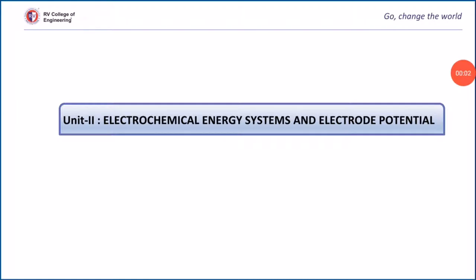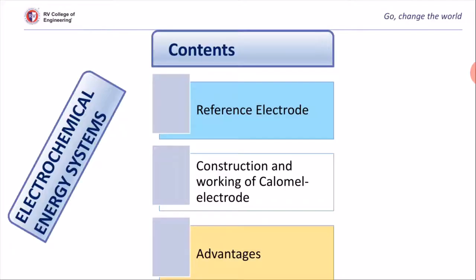Welcome back to engineering chemistry class. Today we will continue our discussion in unit 2: electrochemical energy systems and electrode potential. In today's class I am going to cover different types of electrodes, reference electrodes, construction and working of calomel electrode, advantages of calomel electrode over other electrodes, and measurement of single electrode potential using calomel electrode.